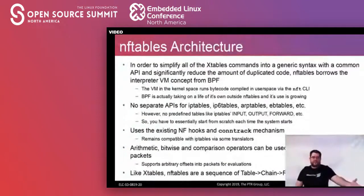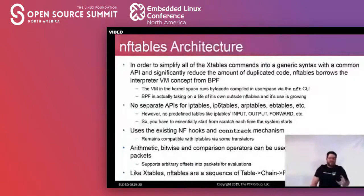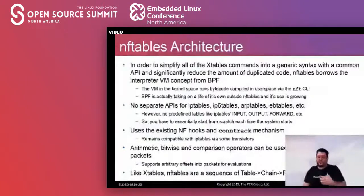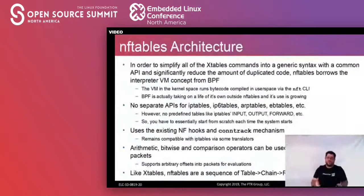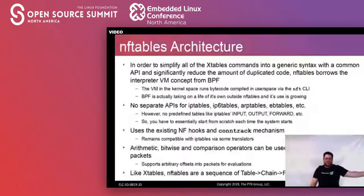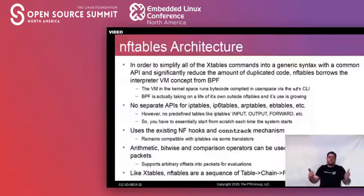There are no predefined tables like input, output, or forward — these are already all built into NF tables. NF tables still uses the hooks for conntrack; the Linux kernel still needs to track connections, and this is all hooked in nicely. Another thing NF tables really brings to the table is arithmetic and bitwise comparison operators — so you can actually do fairly complicated firewall rules to do certain types of matching. Just like X tables, NF tables more or less still uses the same table/chain/rule tuple set, so it should all still look basically familiar even if the backend has changed rather dramatically.